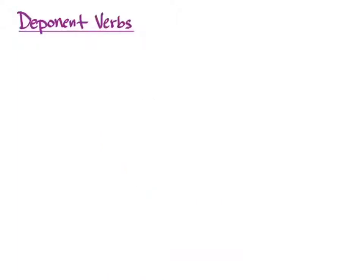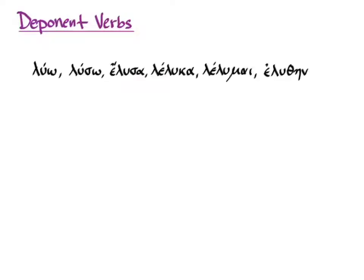Deponent verbs are simply a different category of verbs that look a little different from the verbs that you're used to. You are used to verbs like luo: luo, luso, elusa, leluca, lelumai, eluthane — that is the pattern you're used to in your principal parts.